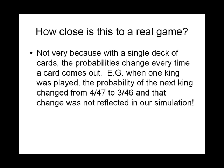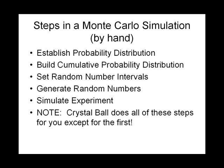How close is this to a real game of blackjack? It's not very close, because with a single deck the probabilities change every time a card comes out. For example, when that first king came out of the deck, the probability of the next king went from four over forty-seven to three over forty-six, and we didn't reflect that change in our simulation. We said the probability of each card stays the same no matter how many cards come out. So the steps in a Monte Carlo simulation by hand are: establish your probability distribution (cumulative), set your random number intervals, generate your random numbers, and simulate your experiment. When we get to Crystal Ball in the next video, you'll see that Crystal Ball does all these steps for you except for establishing a probability distribution — that's the decision you make and tell Crystal Ball to use. But it does everything else for you.